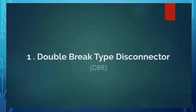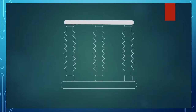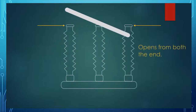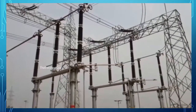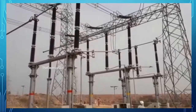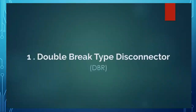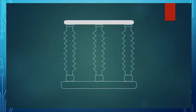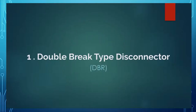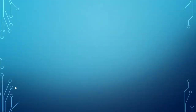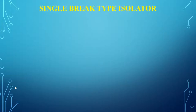You can see how the double break type isolator is connected and how it works. At the last stage of operation, there is an arc formed. We will see what an arc is and how it forms in the coming slides.